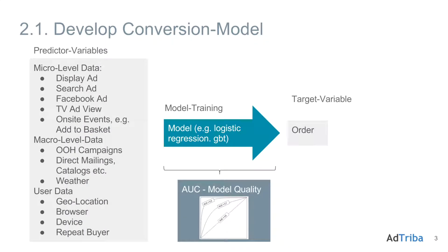The attribution modeling basically consists of two steps. The first step is developing a conversion model, which is a predictive model that can take a user and its marketing touchpoints as an input and calculate a conversion probability.